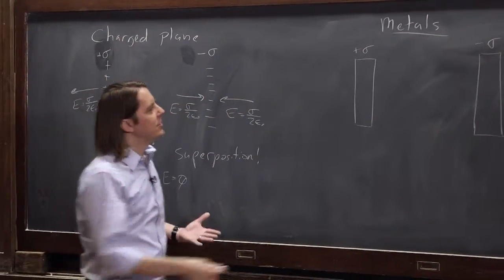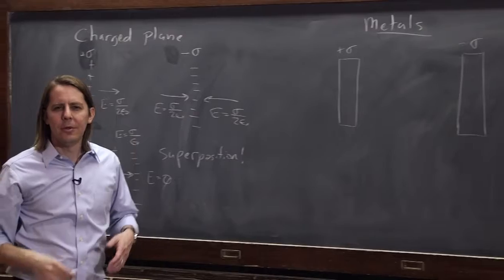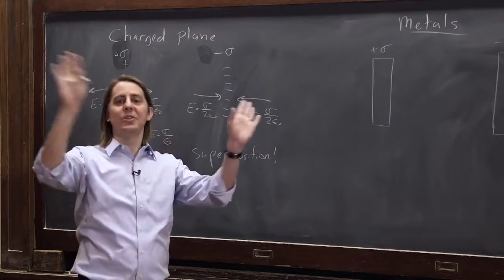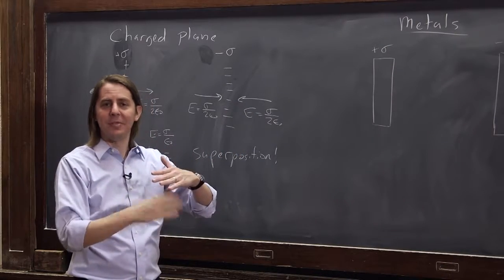So the idea, the question is, isn't the field outside that one bigger? Because remember when we talked about the field at the surface of a metal, it only puts its field in one direction.